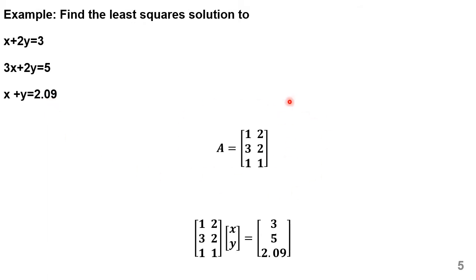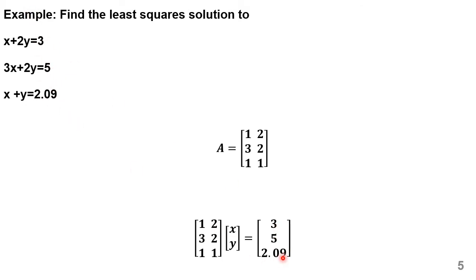We define matrix A from the coefficients: the first row is [1, 2], the second row is [3, 2], and the third row is [1, 1]. So Ax = b, where x = [x1, x2]ᵀ and b = [2, 5, 2.09]ᵀ.